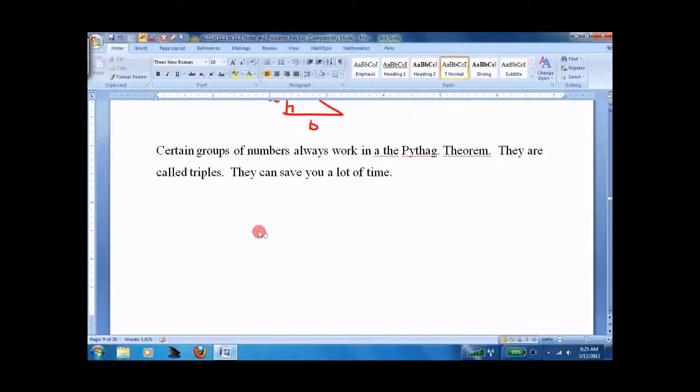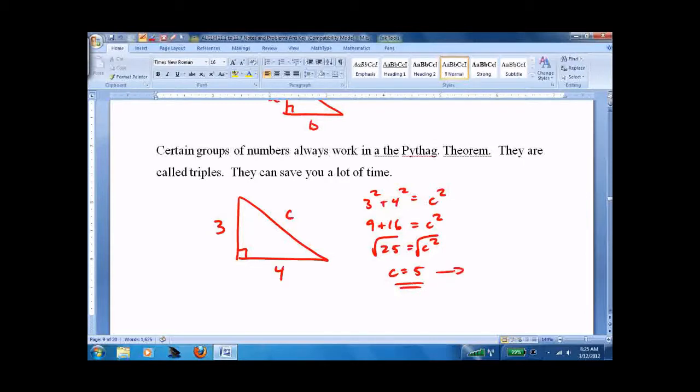So, here's an example. If this side is three and this side is four, what's c? Well, you go three squared plus four squared equals c squared. 9 plus 16 equals c squared. 25 equals c squared. Square root of both sides, c equals 5. Since it represents an actual length, you do not need the plus minus. And that's it.